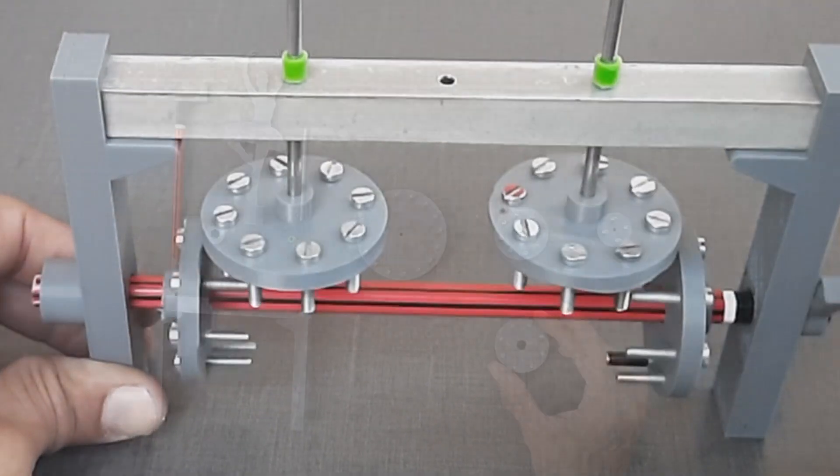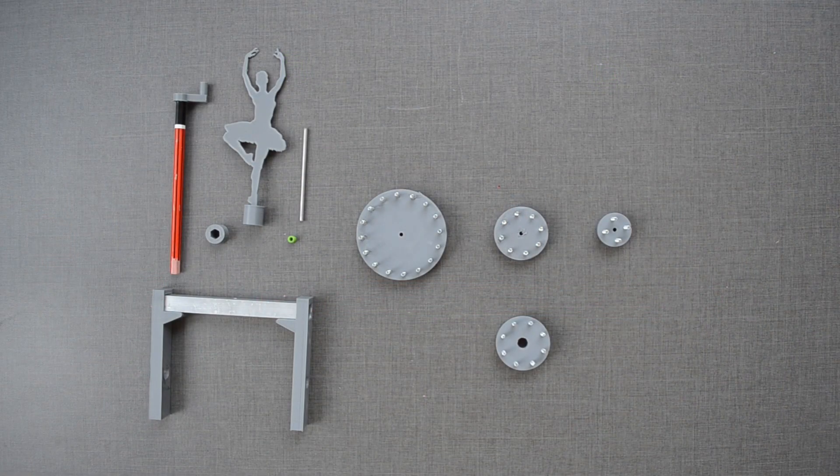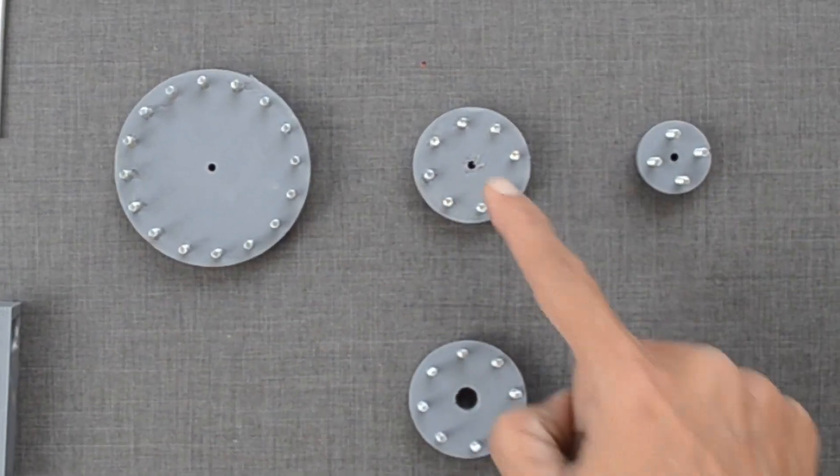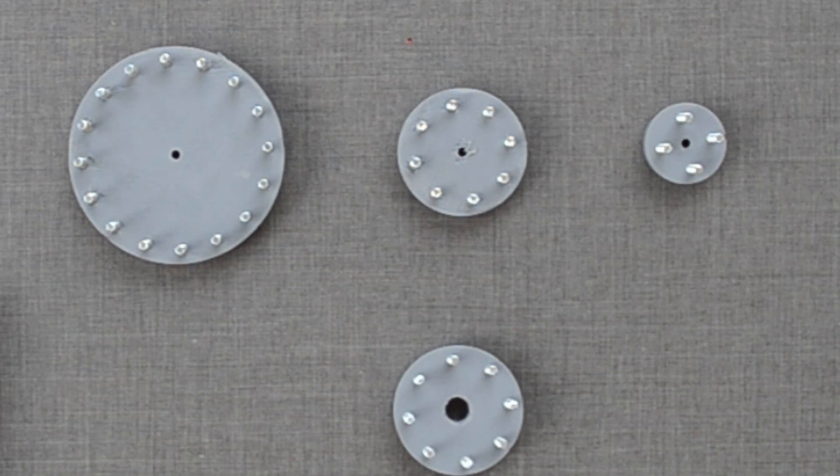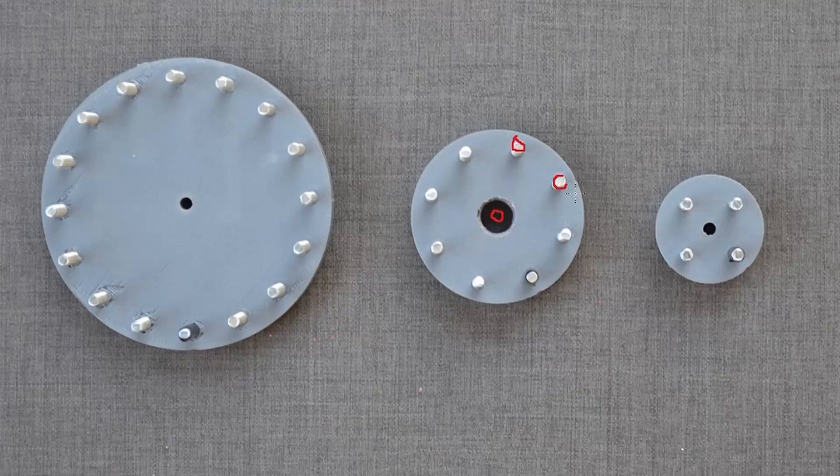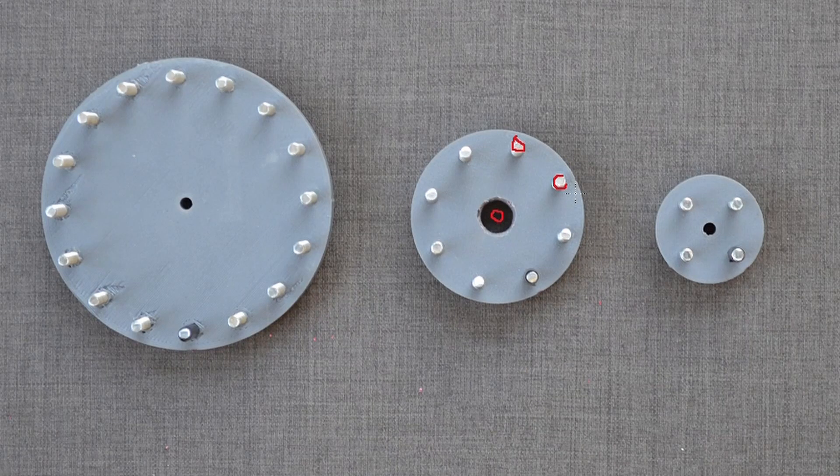Now some calculations. Wheels with same number of pins mesh very easily. But things are different when the number of pins change. Important thing to remember is the spacing between two pins. It should be the same for right meshing.